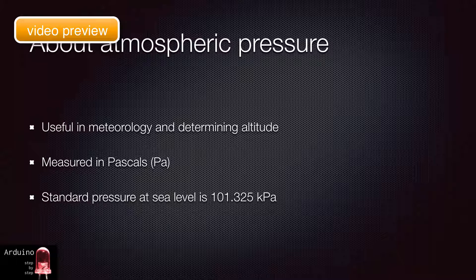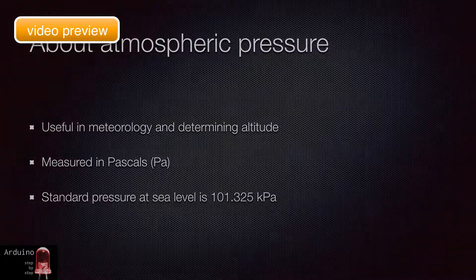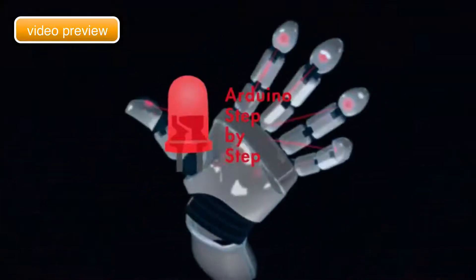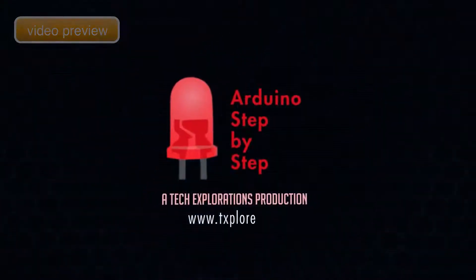Therefore, measuring the atmospheric pressure is also a simple way of figuring out your altitude, or the altitude of one of your flying gadgets. A standard unit of measuring atmospheric pressure is Pa, or Pascals. At sea level, the standard pressure is defined to be 101,325 Pascals.